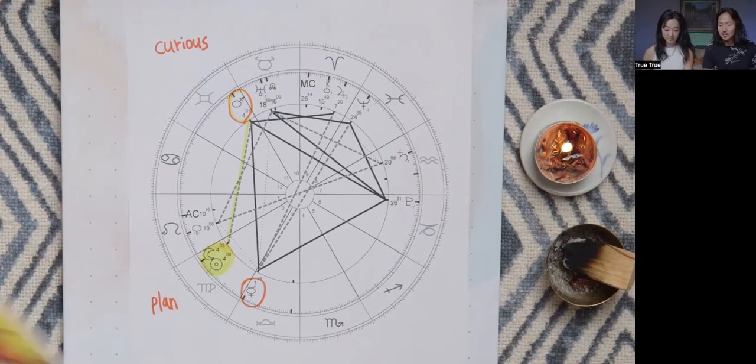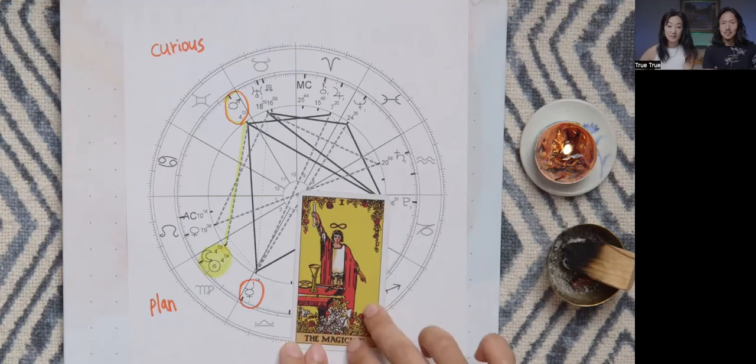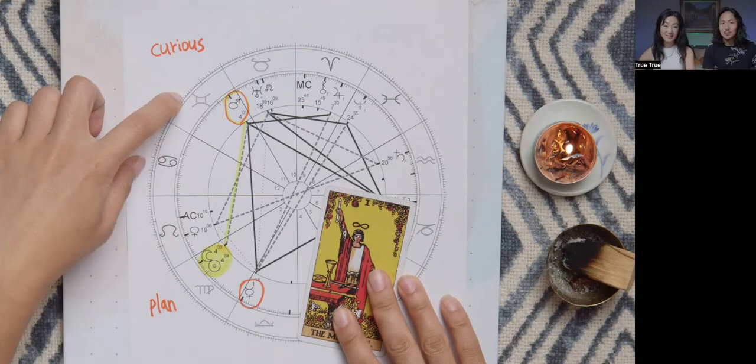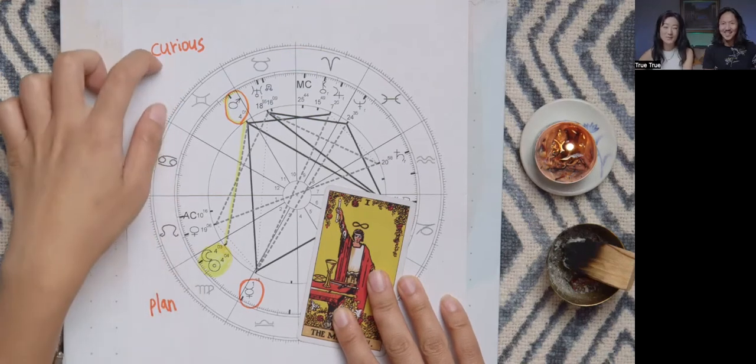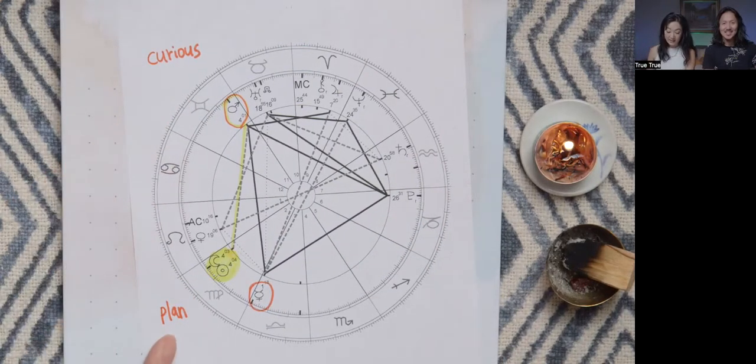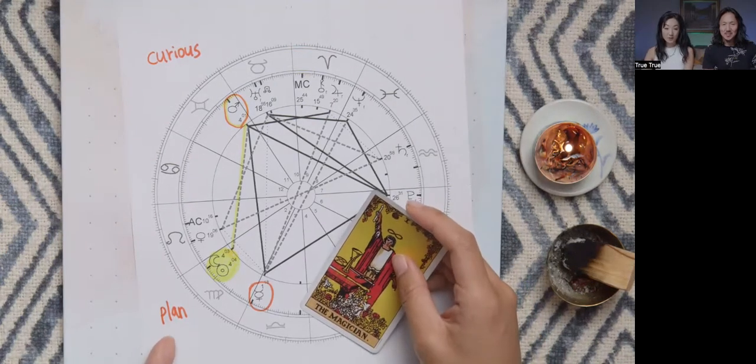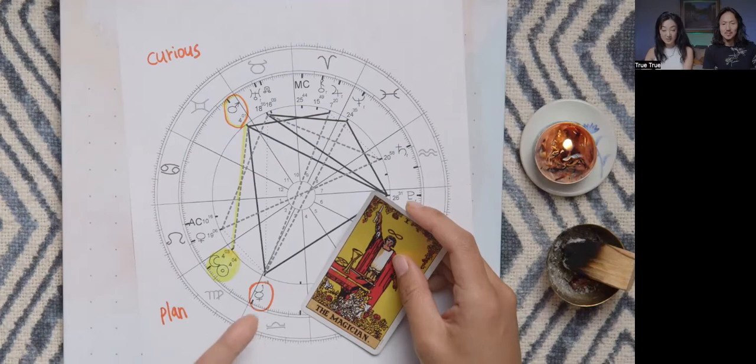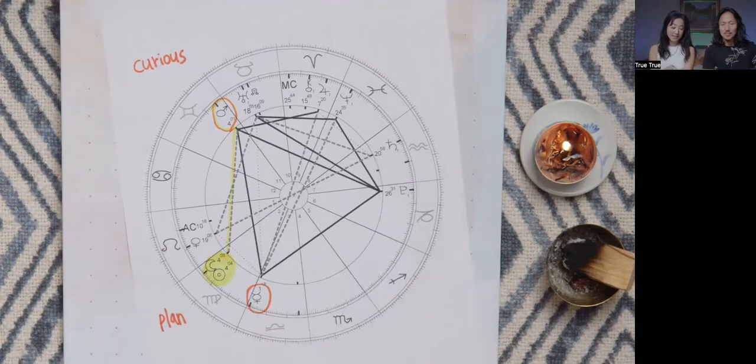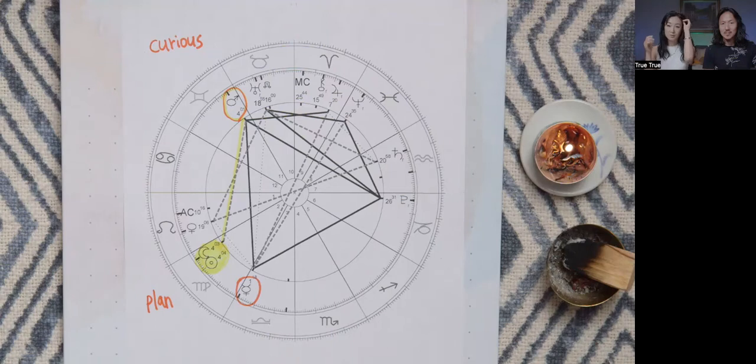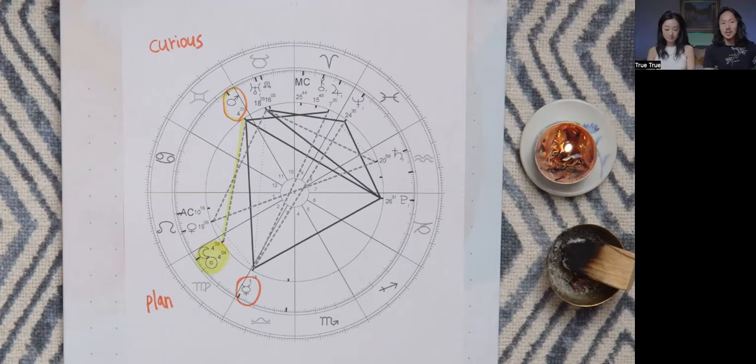However, Mars has really beautiful trine energy with Mercury, and this is really interesting. Mercury - the corresponding card in Tarot is the Magician - rules two different signs which are Virgo and Gemini. So Virgo can get the planning through Mercury because Mars cannot provide that, but Mars can do this through Mercury. Mercury being in Libra can provide a lot of verbal communication, objectivity, looking at the whole spectrum, and being fair.